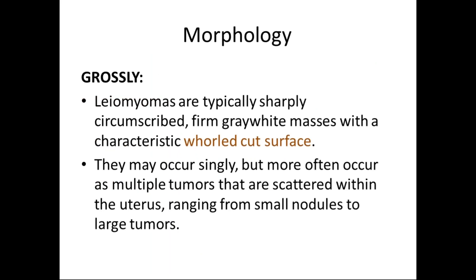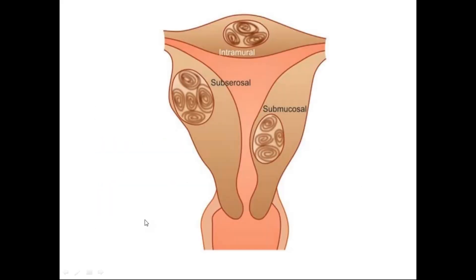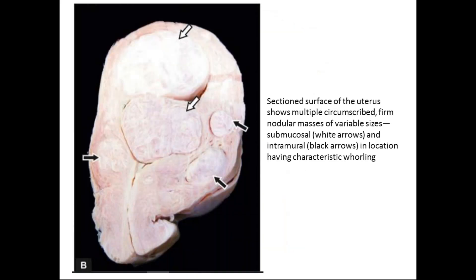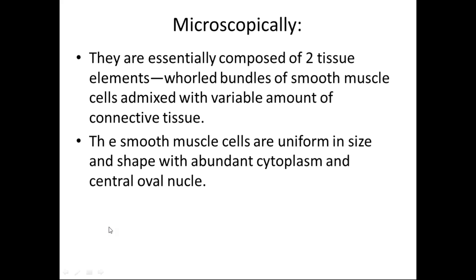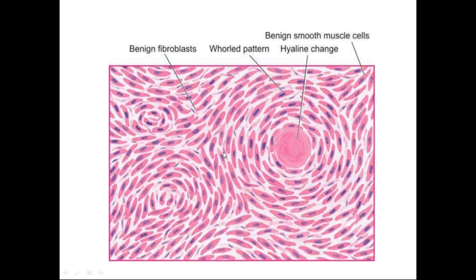Key points to remember: grossly, leiomyomas appear as firm grey-white well-circumscribed masses with a whorled cut surface. There are three types based on location: intramural, subserosal, and submucosal. Microscopically, the cells are spindle-shaped with moderate to abundant cytoplasm and a normal-appearing, centrally placed cigar-shaped nucleus with perinuclear halo.